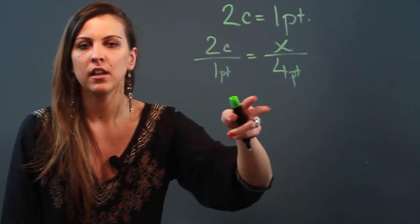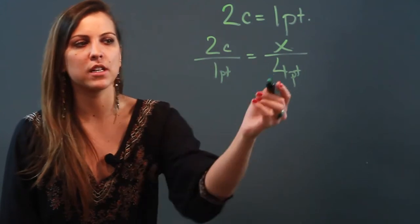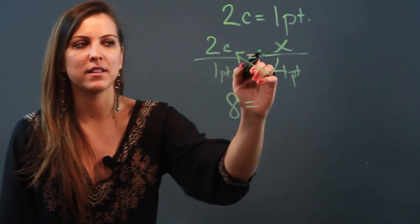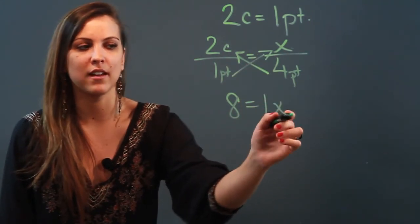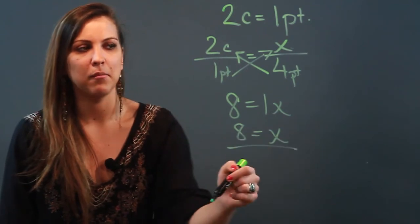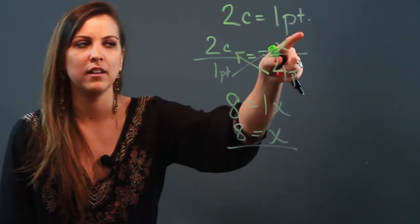I've set up a proportion and now all I do to solve this proportion is cross multiply. So four times two is eight equals one times x is just one x, and that's the same thing as just x. So x equals eight, meaning that in four pints there would be eight cups.